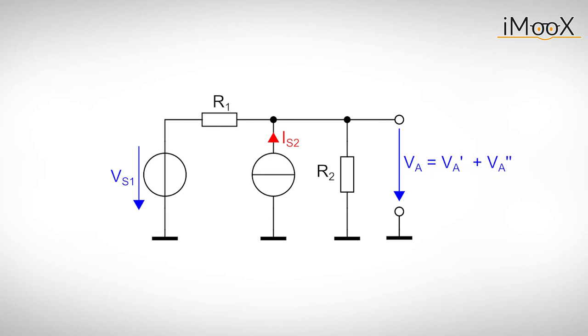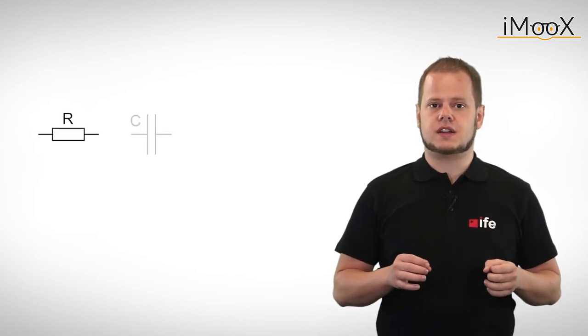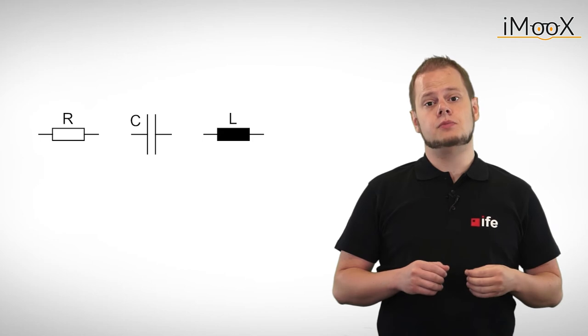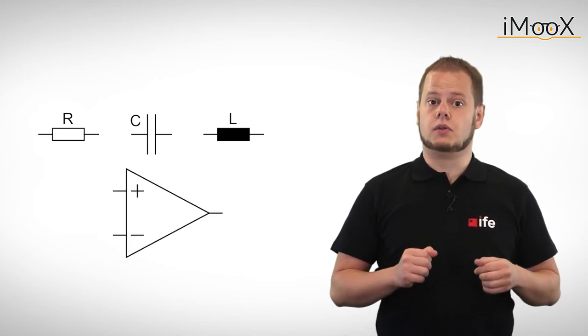But be aware this principle only works for linear circuits. This means it cannot be used if there is a single component in the circuit which does not have a linear current voltage relation. Fortunately resistors, capacitors, inductors and even operational amplifiers to some extent have a linear current voltage relation.